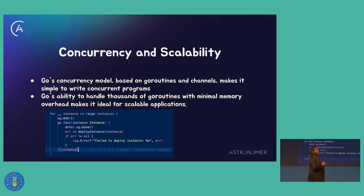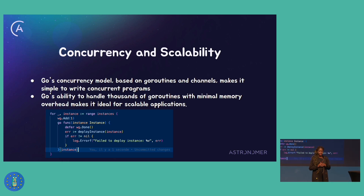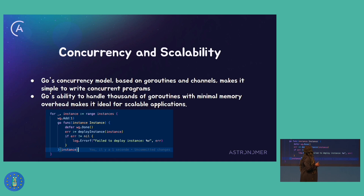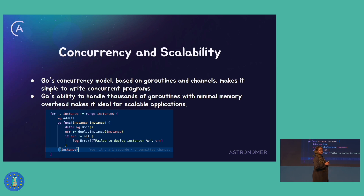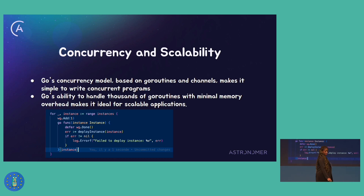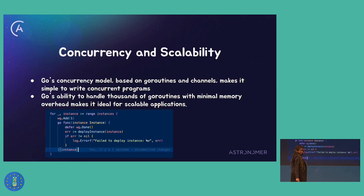You can't talk about Go without mentioning concurrency, and concurrency is one of the things that make Go so beautiful. In our codebase, we leverage Go routines to manage operations such as deploying multiple Airflow instances, interacting with Kubernetes, and operating Helm charts. Because of Go routines, there is minimal memory overhead, which makes it ideal for applications that require scalability. This example shows how we deploy multiple Airflow instances concurrently — on line three, there is the 'go' keyword, which is the way to start a new Go routine.